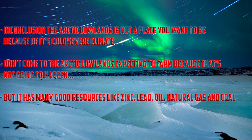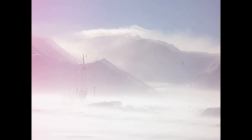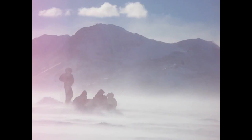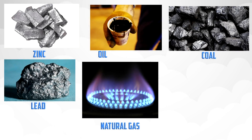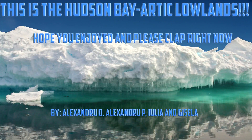In conclusion, the Arctic Lowlands is a division between the Canadian Shield and the Inuitian region, taking up 3.2% of Canada's land. The harsh climate makes it difficult for vegetation as the ground remains frozen all year round. Although this region is extremely cold, it has resources such as zinc, lead, oil, natural gas, and coal. This is the Hudson's Bay Arctic Lowlands.